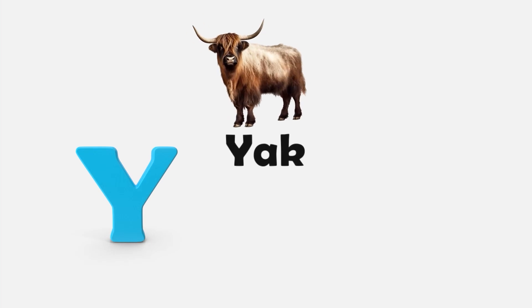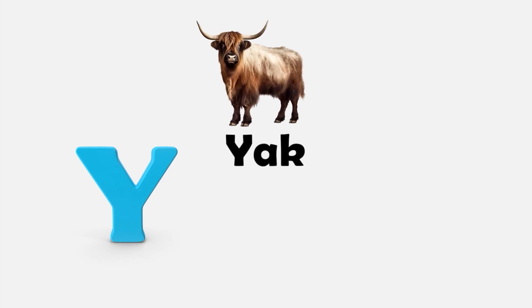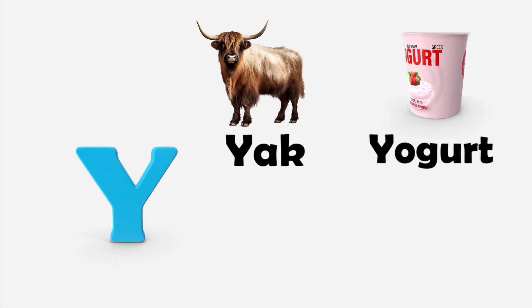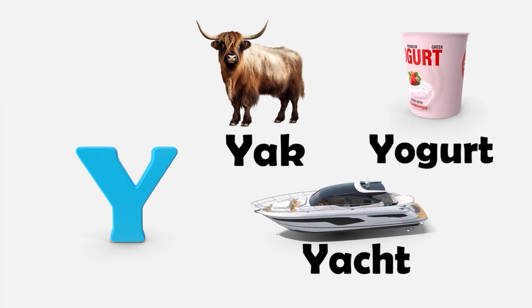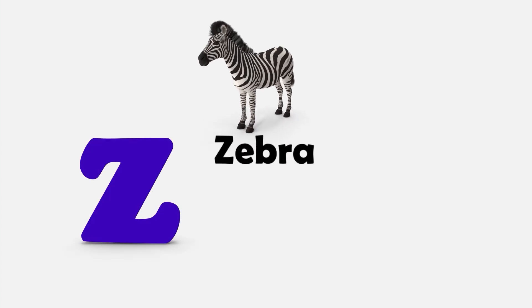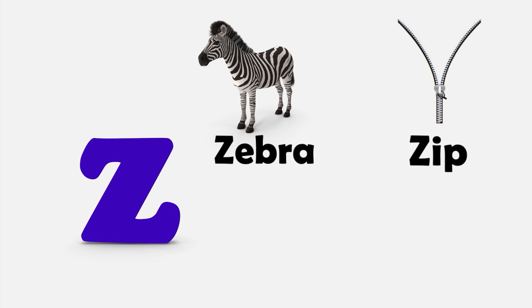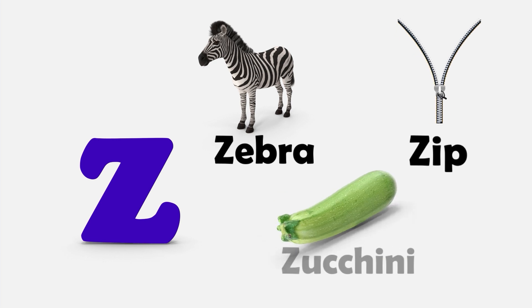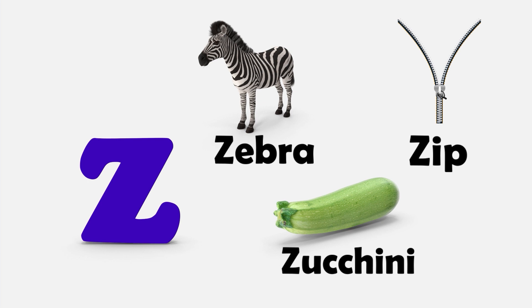Y — Y is for Yak. Y is for Yogurt. Y is for Yacht. Z — Z is for Zebra. Z is for Zip. And Z is for Zucchini.